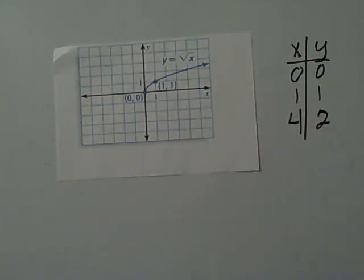Once we have our three points we draw our graph. This is the standard form, or the parent form, of y equals the square root of x. It's called the parent function.